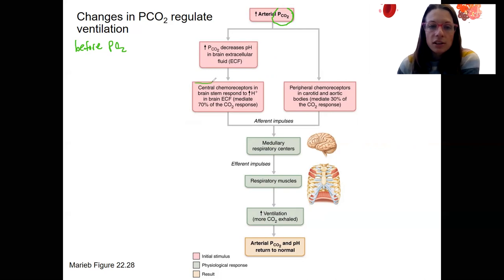This is our central. This is our peripheral. Our central is primarily through pH that's able to go into the extracellular fluid of the brain. This is about 70% of our response to changes in CO2 is high hydrogen, low pH. High PCO2 equals high hydrogen, which is low pH.